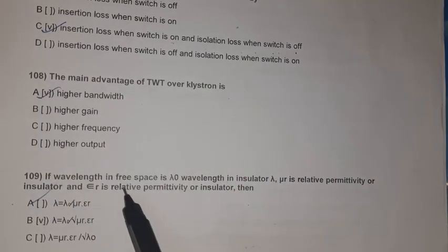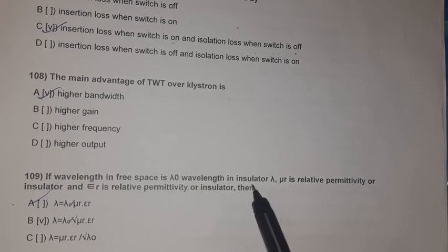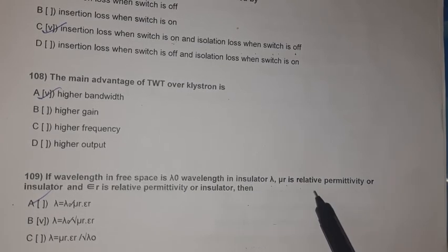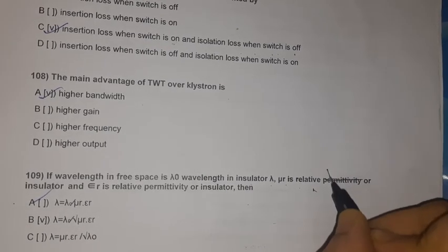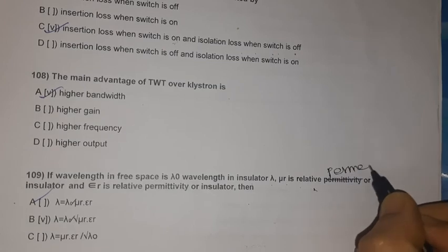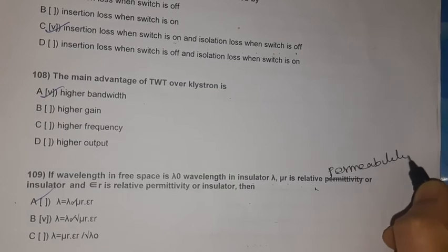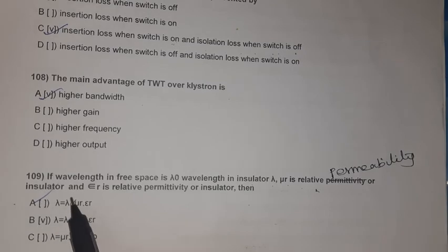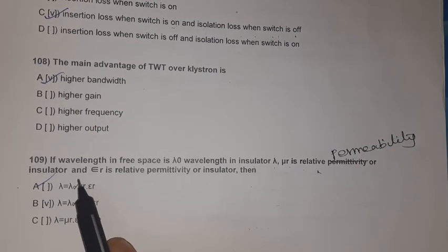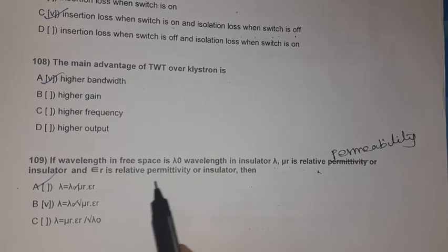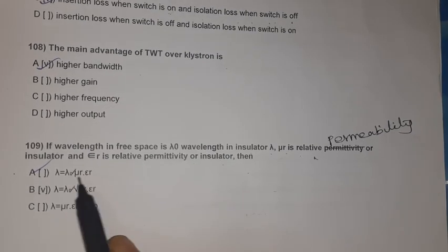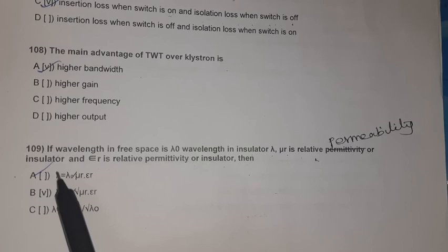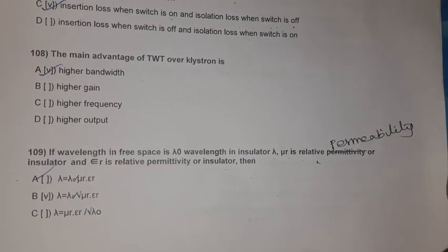Question 107: If λ₀ is the wavelength in free space, and μr is the relative permeability and εr is the relative permittivity of an insulator, then the wavelength in the insulator: λ = λ₀ / √(μr × εr).